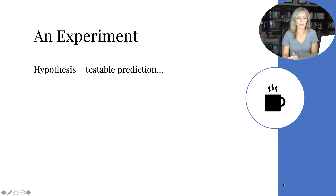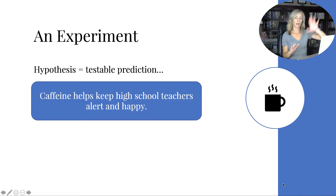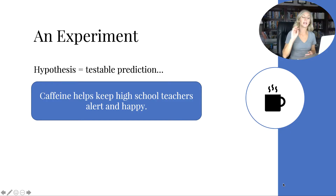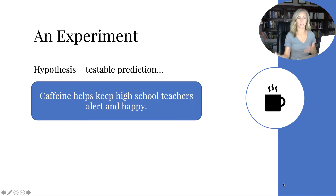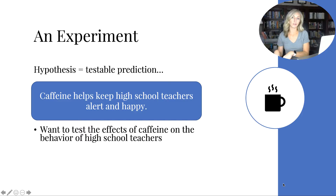In an experiment, you start with a hypothesis — that testable prediction. In our example experiment, the hypothesis is that caffeine helps keep high school teachers alert and happy. Since caffeine is a stimulant, you want to test its effects on the behavior of high school teachers.